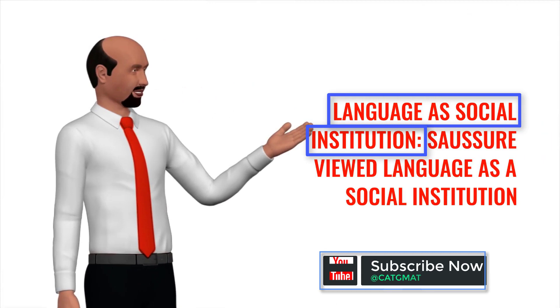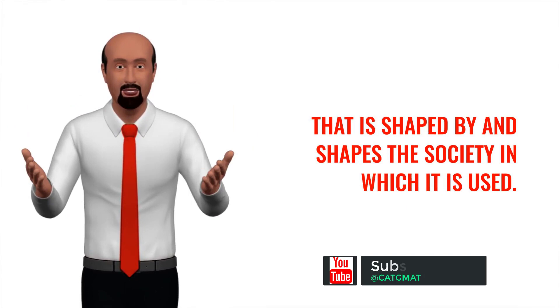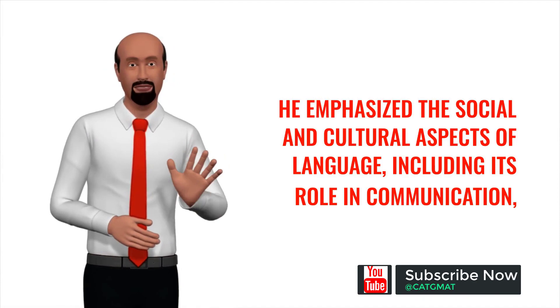Language as social institution: Saussure viewed language as a social institution that is shaped by and shapes the society in which it is used. He emphasized the social and cultural aspects of language, including its role in communication, identity formation, and the transmission of culture.